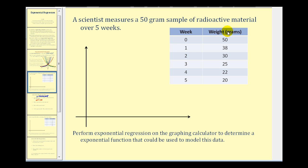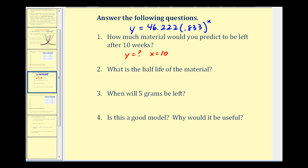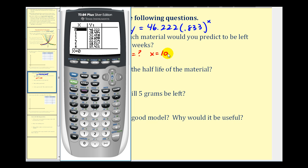Notice that when x is equal to zero, the function value is approximately 46.22 or the value of a. This represents the initial amount at the beginning of the experiment. And notice that according to our data, it was actually 50 grams, but according to our model, it was only 46.22. So there is a margin of error because this is not a perfect model, but that doesn't mean it can't be used to make predictions. Okay, so to answer our question, how much is left after 10 weeks, we'll just scroll down to x equals 10. And according to our model, you would have approximately 7.4 grams of material left after 10 weeks.